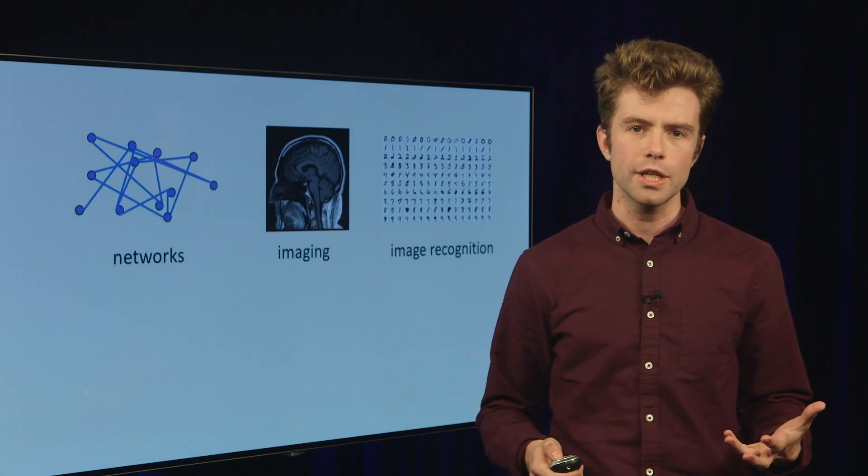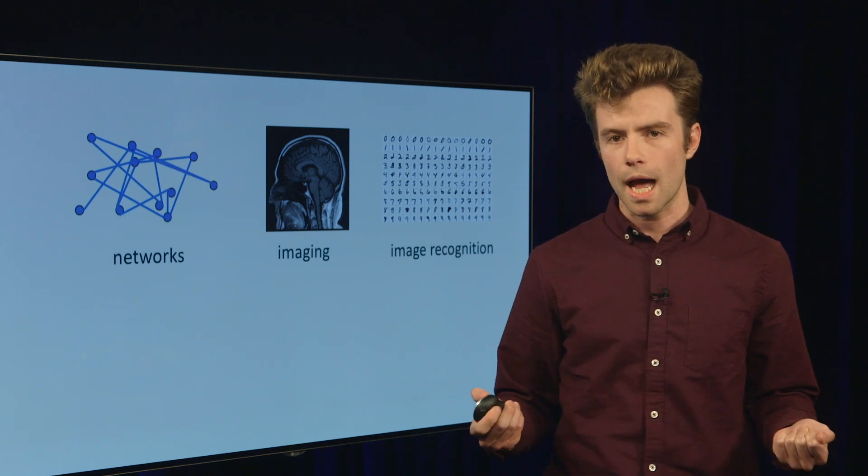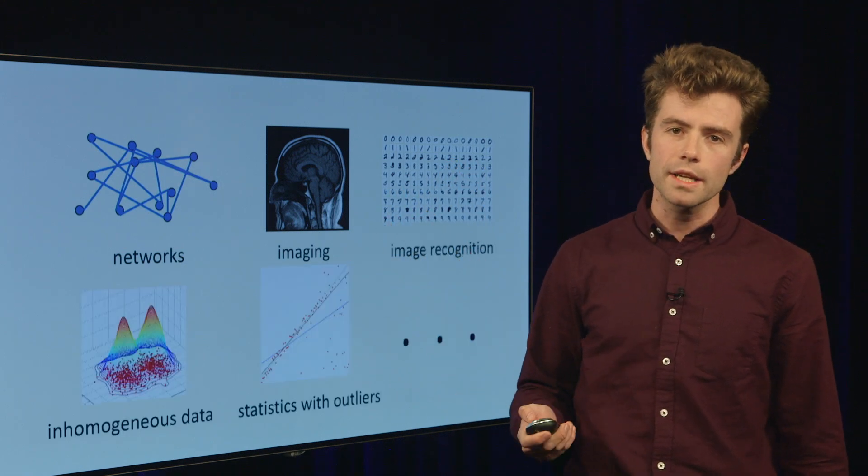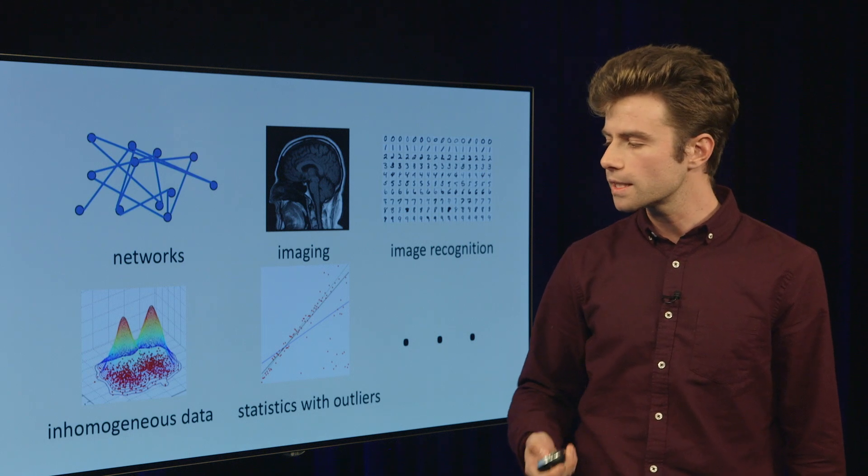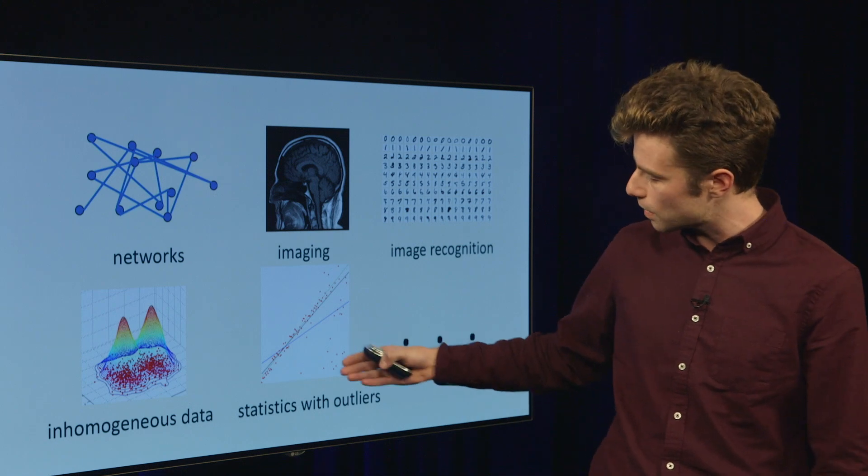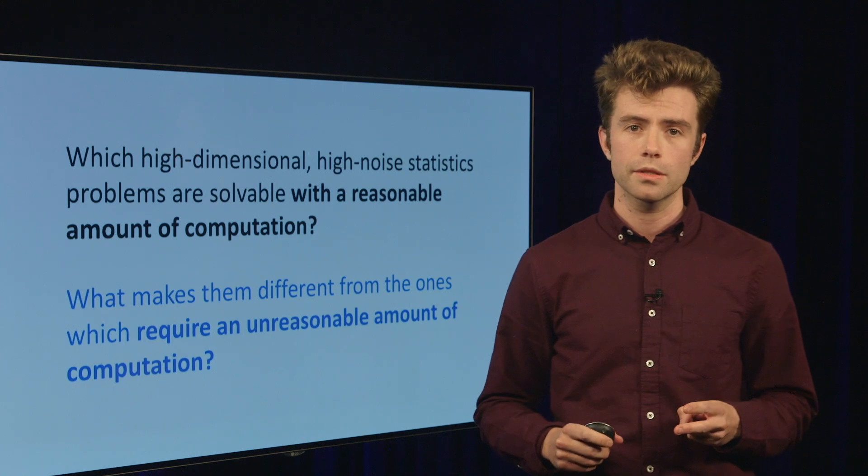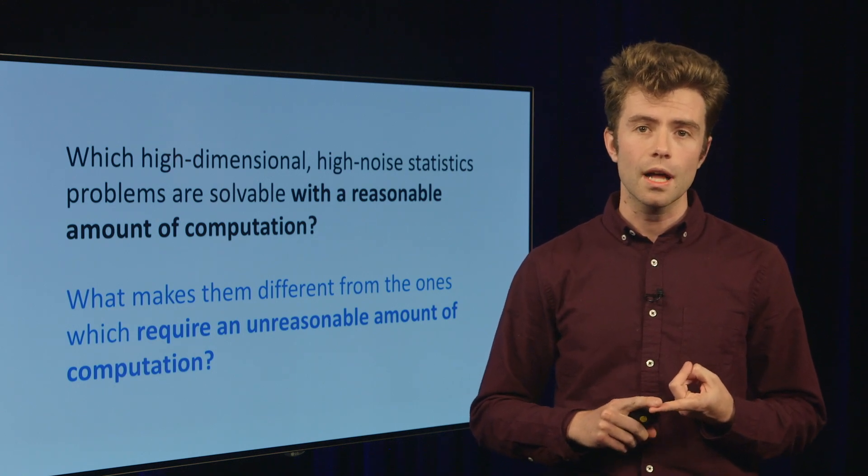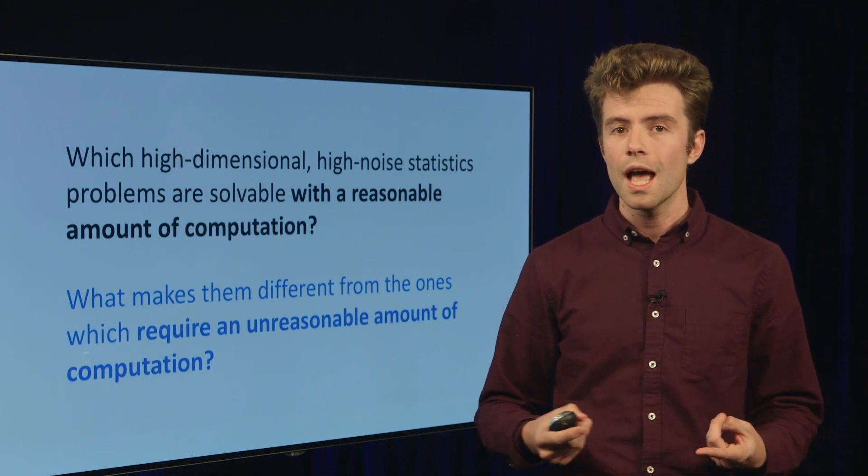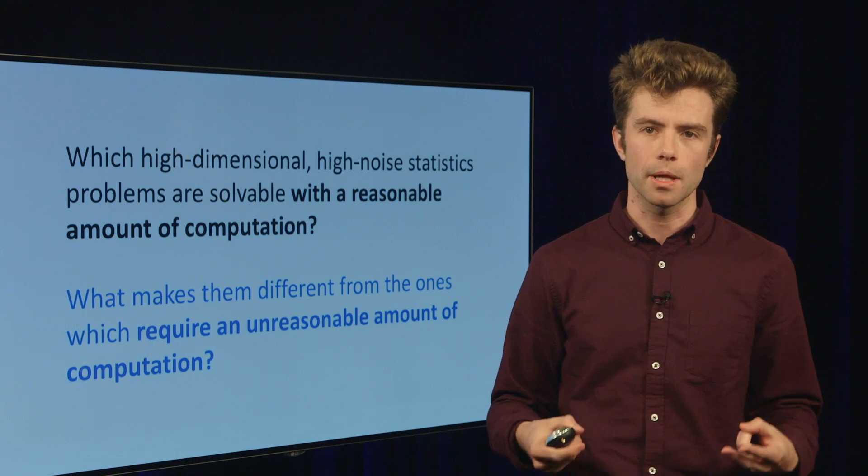So this phenomenon, that naive data analysis strategies require an unreasonable and impossible amount of computation, occurs across applications, like in networks, but also in imaging or in image recognition. And it occurs in fundamental statistics problems, like separating inhomogeneous data sets, or doing statistics in the presence of outliers. My research focuses on two fundamental questions. Which high dimensional, high noise statistics problems are solvable with a reasonable amount of computation? And what makes those problems different from the ones which inherently require an unreasonable amount of computation?